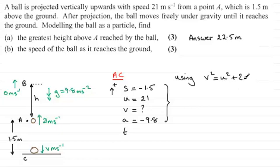Now with this version, we've got V squared then equals U squared, U is 21, so that's 21 squared, plus 2 times A, A being minus 9.8, and S being minus 1.5.